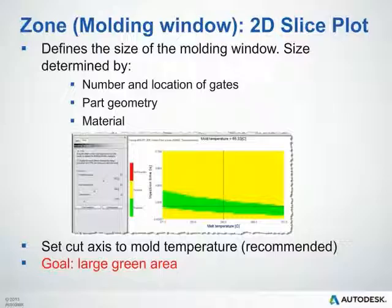This means we have quite a bit of room to deviate in our process settings. If the green band is very narrow, we may need to re-evaluate our material selection, our gating location or number of gates, or possibly look at optimizing our part geometry. When reviewing this plot, we typically set the cut axis to mold temperature — it's recommended but not required — and again the goal is to have a large green area or a very large processing window.